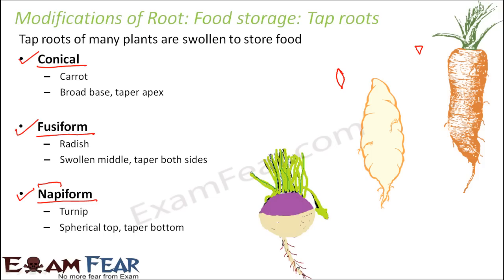The edible part of carrot, radish, or turnip is nothing but the root — the root stores all the food the plant needs. These are all examples of tap roots, where one primary root has several branches coming out. Depending on their different shapes, they are classified as conical, fusiform, or napiform.